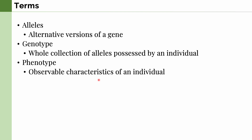Let's take, for example, eye color. The alternative versions of eye color can be brown, green, or blue, and these are all alleles. The genotype is the genetic makeup of the individual that dictates its eye color, and the phenotype is the observable eye color that we can see.